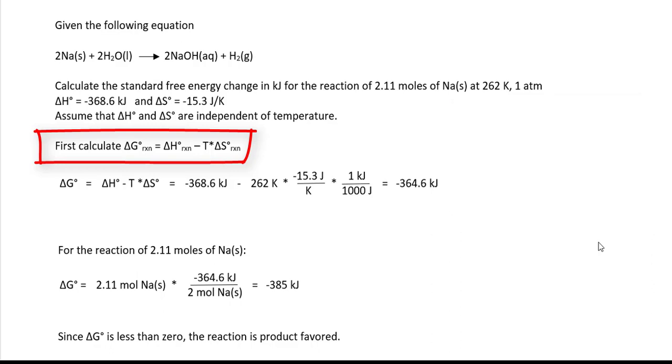So we substitute the numbers in. We get a delta G of negative 364 kilojoules. Notice the conversion of joules to kilojoules in the delta S term right here.